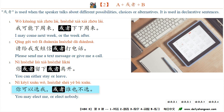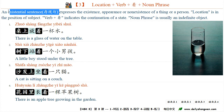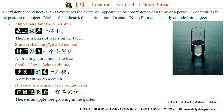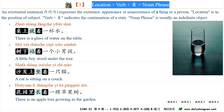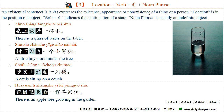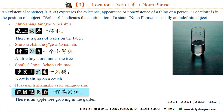An existential sentence (存在句) expresses the existence, appearance or non-existence of a scene or a person. Location is in the position of subject. Verb plus 着 indicates the continuation of a state. The noun phrase is usually an indefinite object. For example: 桌上放着一杯水。树下站着一个小男孩。沙发上坐着一只猫。花园里长着一棵苹果树。